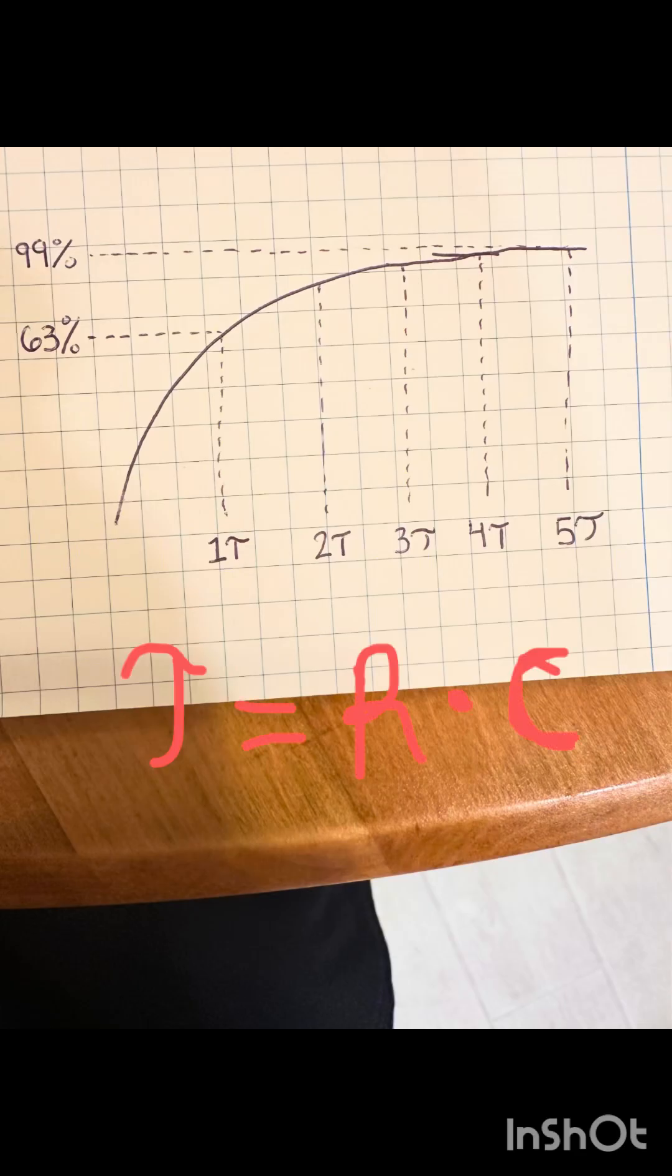The RC time constant is how long it takes to charge a capacitor. You need to remember one time constant is a 63% charge and five time constants is a full charge.